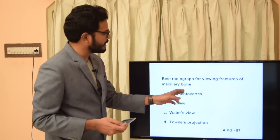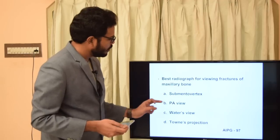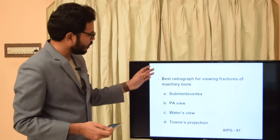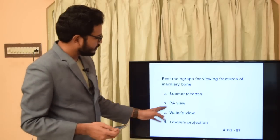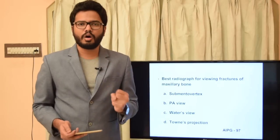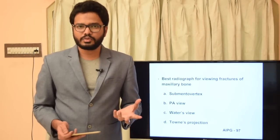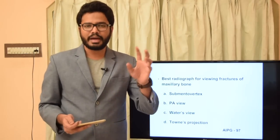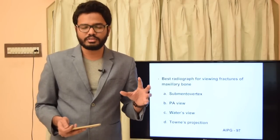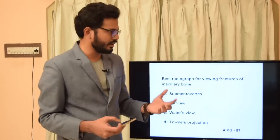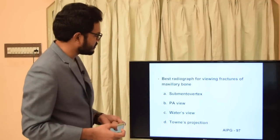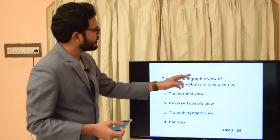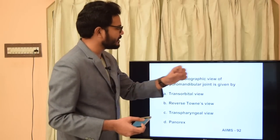Best radiograph for viewing fractures of the maxillary bone: (a) submental vertex, (b) PA view, (c) Waters view, or (d) Towns projection. Waters view, also called occipital mental view or paranasal sinus view, is most appropriate as it allows clear visualization of the maxilla, zygomatic process, and fractures. The appropriate answer is Waters view, option C.